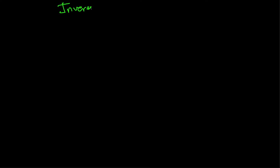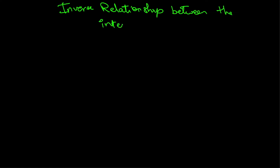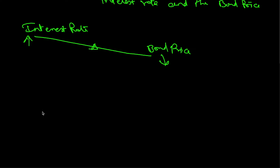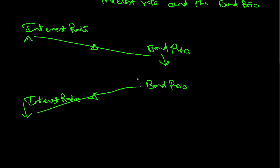There is an inverse relationship between the interest rate and the bond price. When the interest rate goes up, the bond price comes down, and vice versa — when the interest rate comes down, the bond price goes up. So why is this possible and how does this work? That's what we will be seeing now.